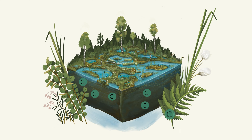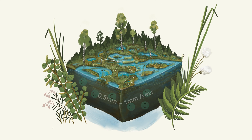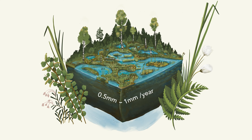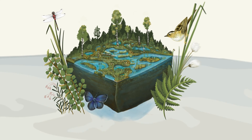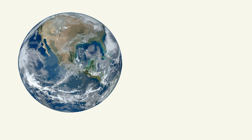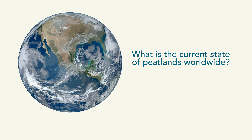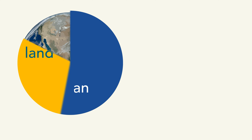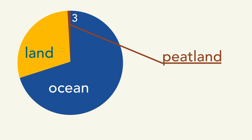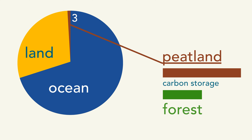Peatlands in the temperate climate region grow 0.5 to 1 mm in height per year. All over the world, peatlands have developed undisturbed over centuries to millennia and have removed large amounts of carbon from the global carbon cycle. Globally, peatlands cover only 3% of the land surface, but they store twice as much carbon in their peat as all the forests on earth, which cover 30% of the land surface.